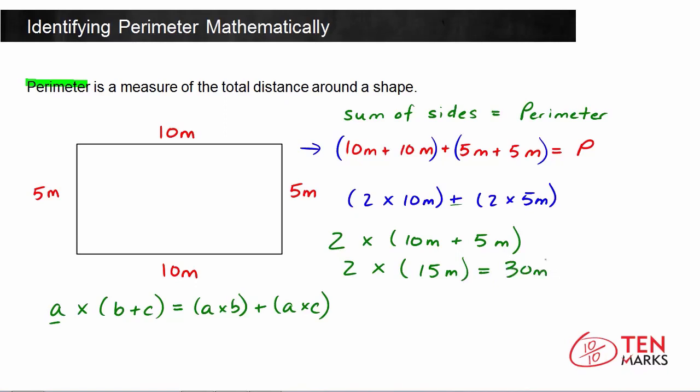So the perimeter of this rectangle would be 30 meters. You would get the same thing if you did the long addition sentence, or if you had 2 times 10 plus 2 times 5. No matter what, you're going to get 30 meters. Now, this brings me to an important point about the perimeter of a rectangle.